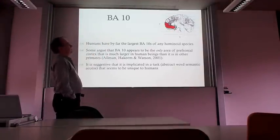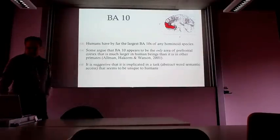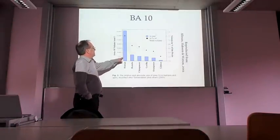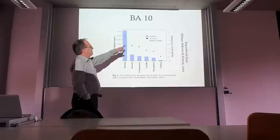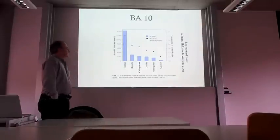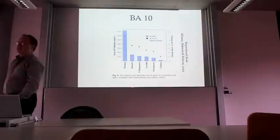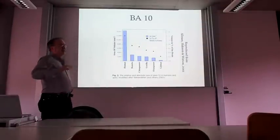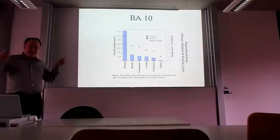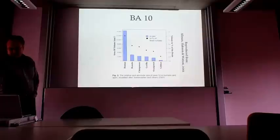The other interesting thing about Brodmann's area 10, once you start looking at it, is that it's an area that seems to strongly differentiate humans from non-human primates—it's proportionally much larger in the human brain than in other primate brains. Data showing the relative and absolute size of area 10 in volume and percent of brain volume compares humans to bonobos, chimpanzees, gorillas, orangutans, and gibbons. The area gets smaller, both in absolute and proportional terms, as you move down the phylogenetic scale.